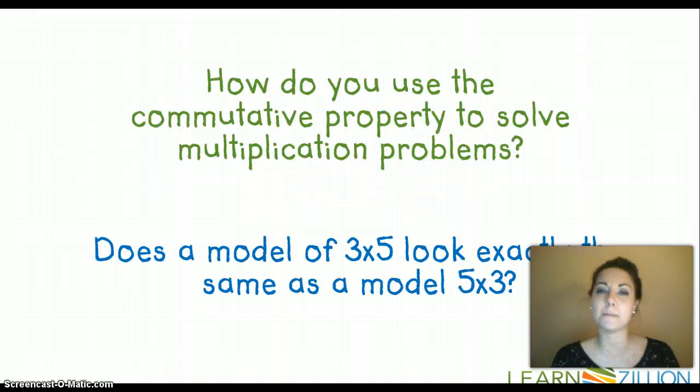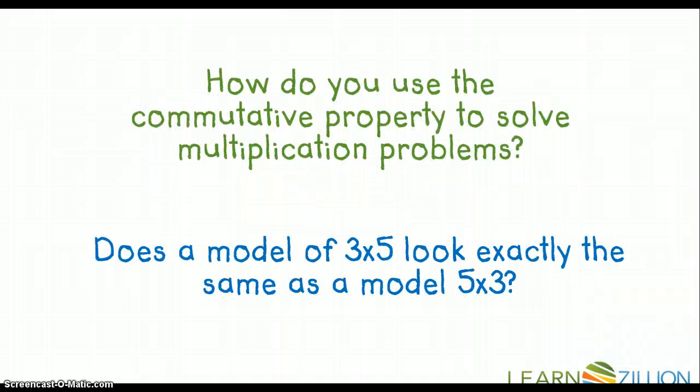Let me show you what I mean. So our guiding question of today is how do you use the commutative property to solve multiplication problems? Does the model of 3 times 5 look exactly the same as a model of 5 times 3?